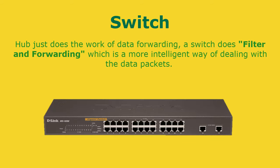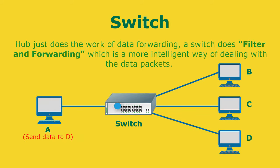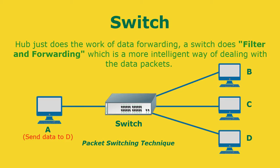When a packet is received at one of the interfaces of the switch, it checks the destination address and transmits the packet to the correct receiver. Before forwarding, packets are also checked for collision and other network errors. This technique is called packet switching technique. The switch also maintains a list of network addresses of all the devices connected to it, which helps to prevent traffic overloading in the LAN.